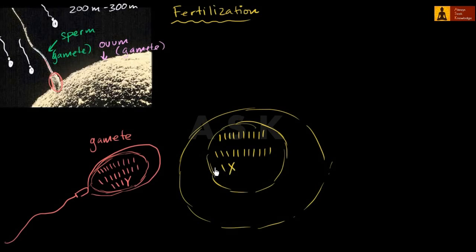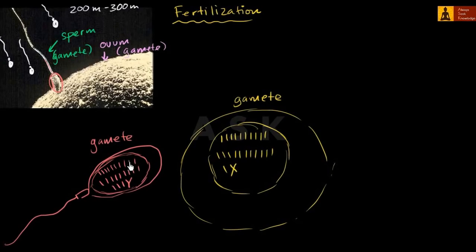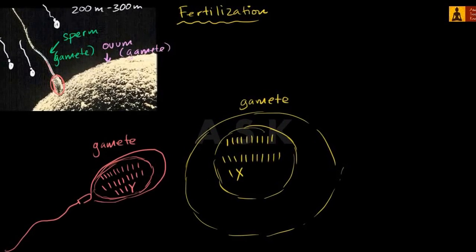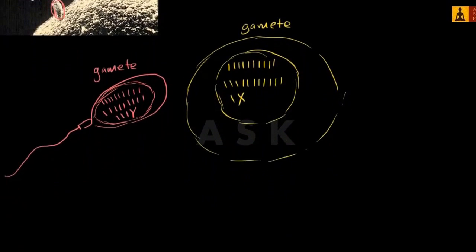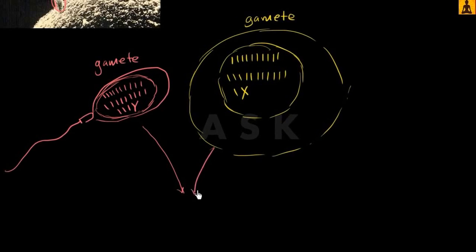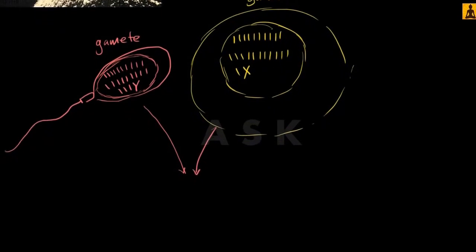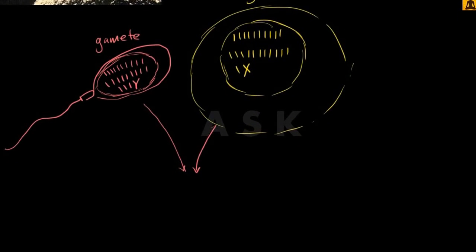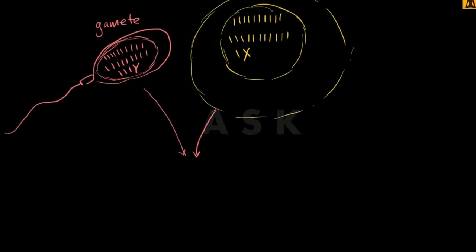So your sex-determining chromosomes are going to be XY — you're going to be male. If this was XX, you're going to be female. So this is also a gamete. A gamete is the general term for either a sperm or an egg. Now once these two things are fused, what do we have? Once they're fused, we're going to have what you could call a fertilized egg, but we're going to call that a zygote.